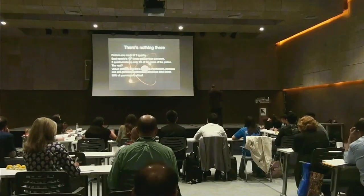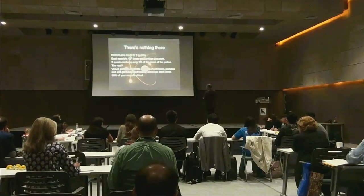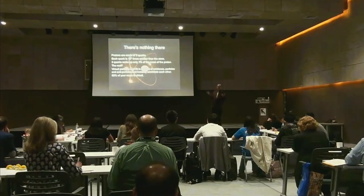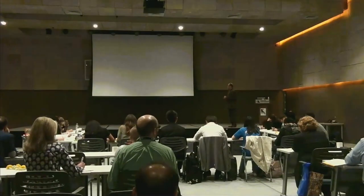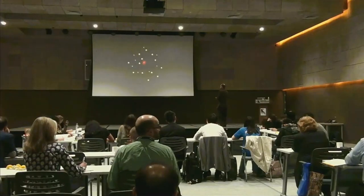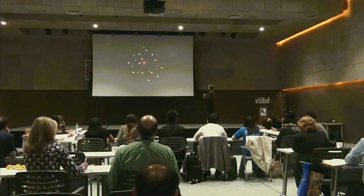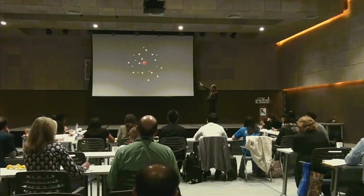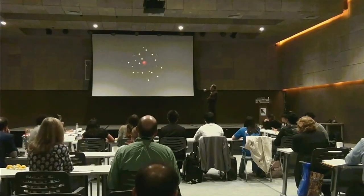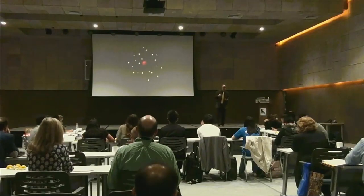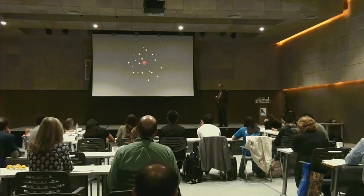99% of your mass is virtual — it's just not even there. And that's for all the matter in the universe. Everything's just that way. Now, this is a quantum mechanical representation of a hydrogen atom — this is one electron being in multiple places all at the same time.